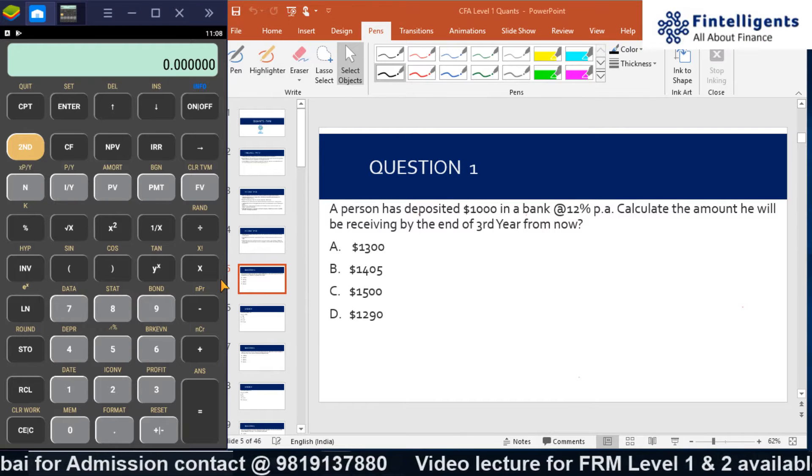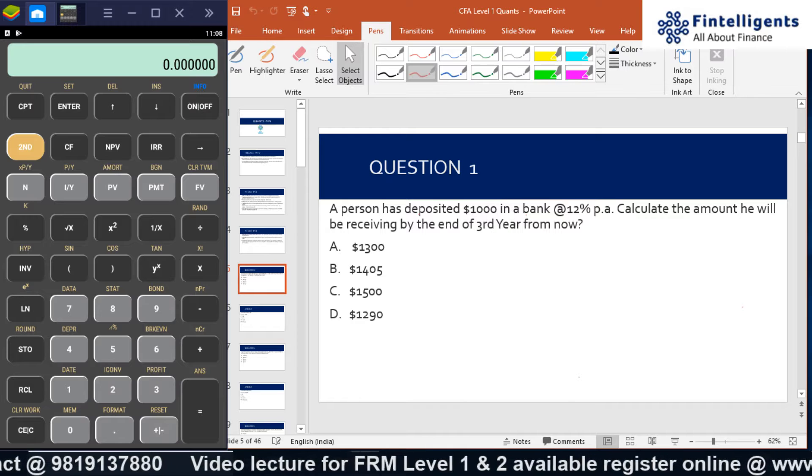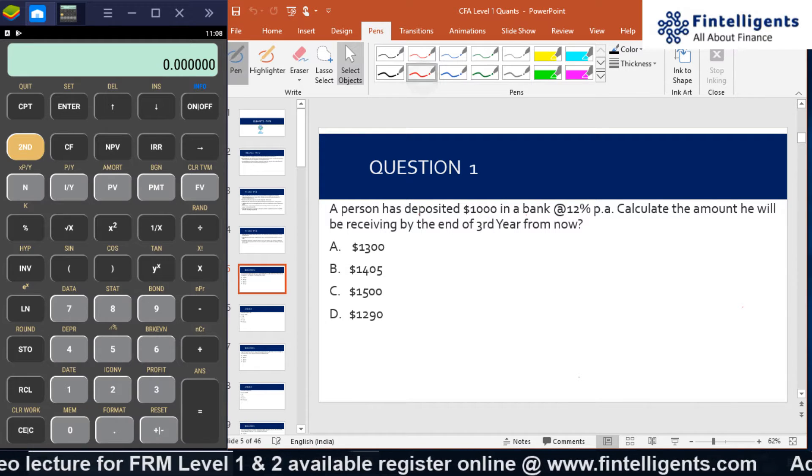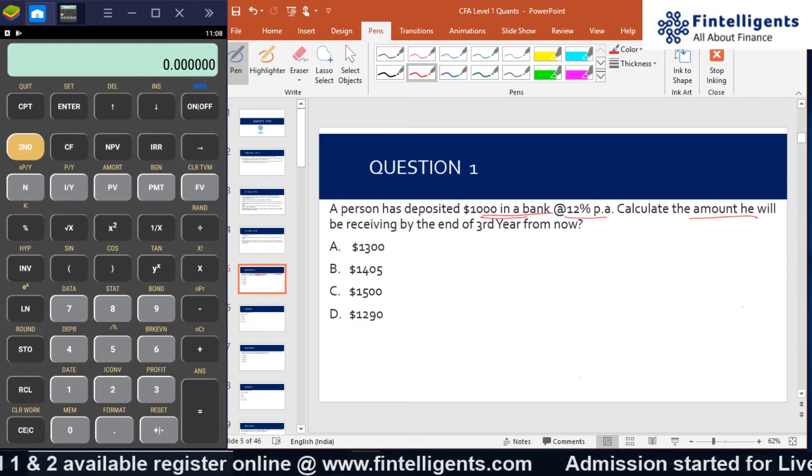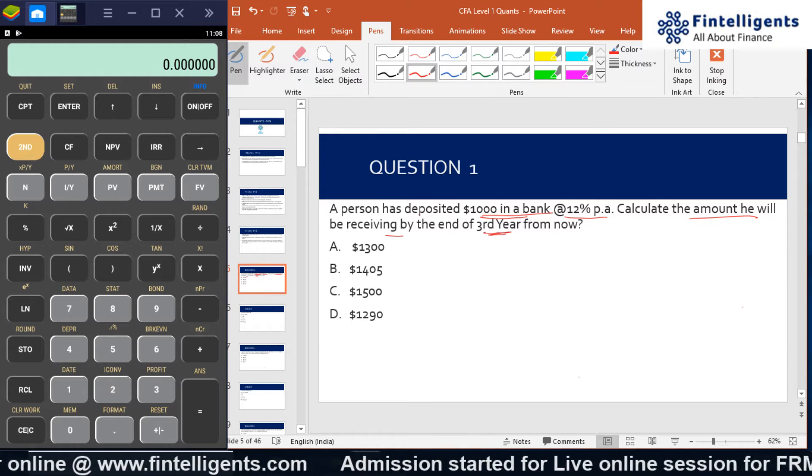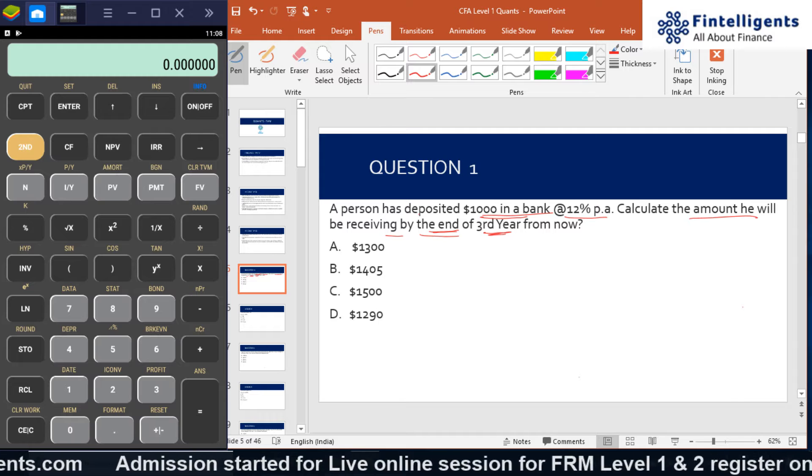The next question on the screen is: a person has deposited $1000 in a bank at 12% per annum. Calculate the amount he will be receiving by the end of third year. Now in this question, we have explicitly mentioned that it is end of third year.